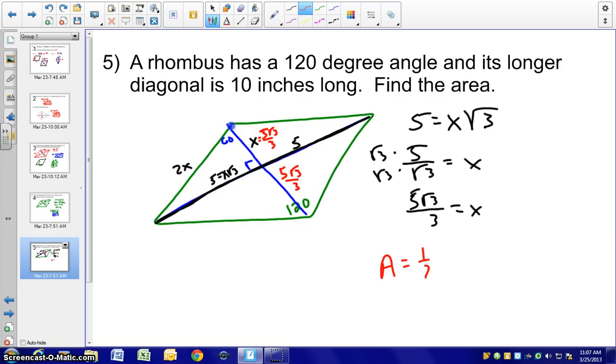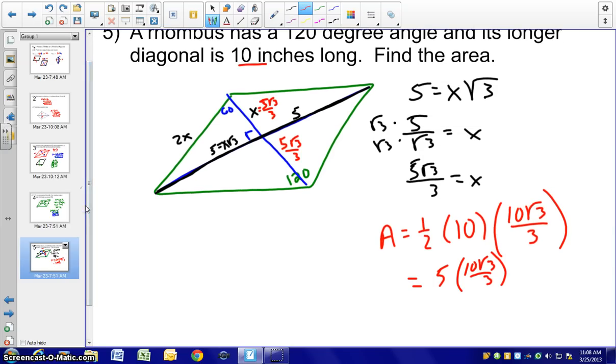Area would be one half the first diagonal, which was given to us, is 10. Then the second diagonal is we've got to add 5 root 3 over 3 plus 5 root 3 over 3, which would give us 10 root 3 over 3. And go ahead and simplify, which would give us 50 root 3 over 3 inches squared.